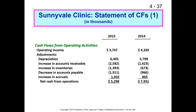You'll notice some numbers have parentheses around them — that's the accounting standard for negative numbers. We're going to subtract $2.5 million as a result of an increase in accounts receivable. Why would we subtract $2.5 million if accounts receivable increased? Remember, we are booking our revenue when services are rendered.